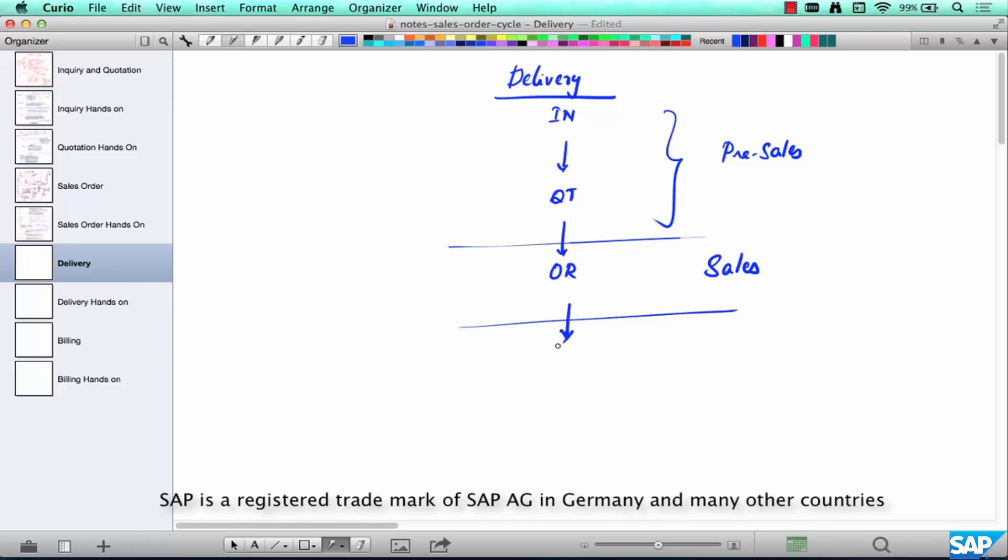Like we discussed in the last class, now we need to deliver the physical goods. This part is called logistics. The document type here is called LF and this behaves differently than an order obviously.